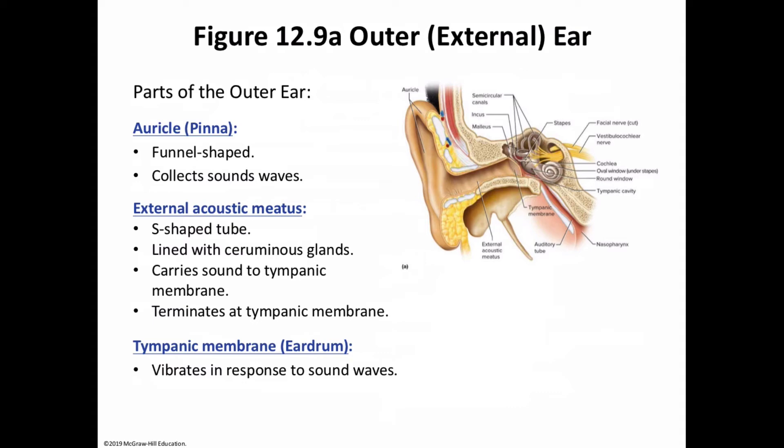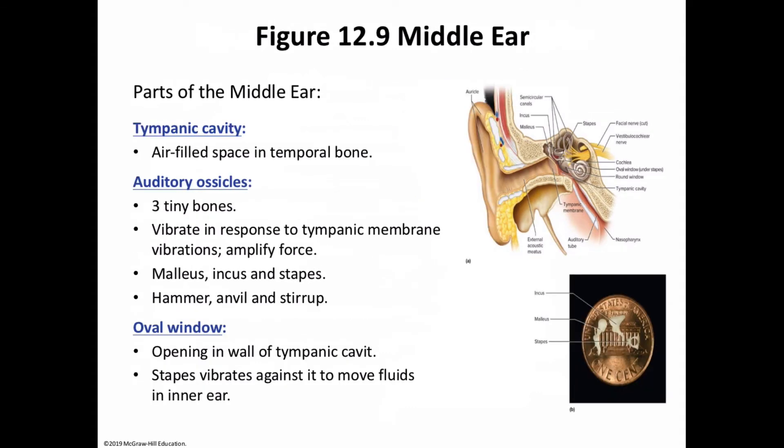The funnel-shaped auricle collects sound waves and channels them to the middle ear, where the tympanic membrane vibrates in response to those sound waves. Figure 12.9B shows the three auditory ossicles — each of those tiny bones could fit on a penny. In the middle ear we have the tympanic cavity, an air space in the temporal bone, and the three ossicles: the incus, the stapes, and the malleus.